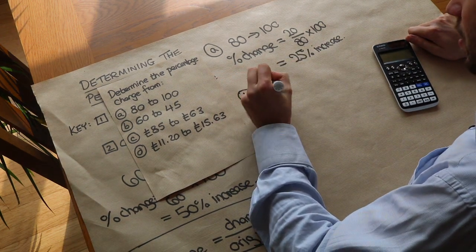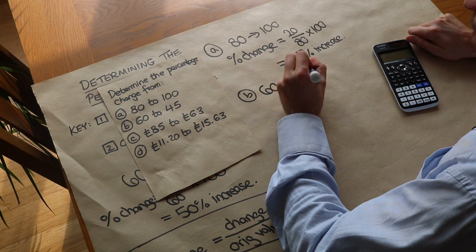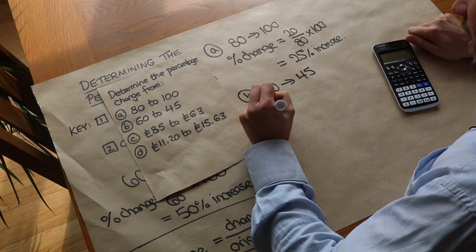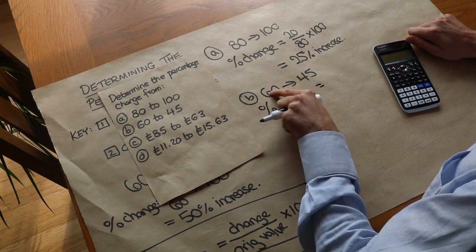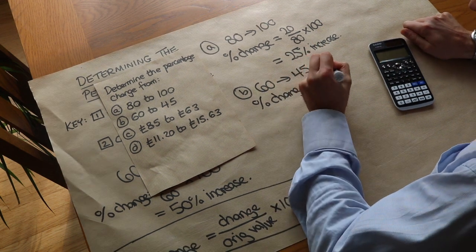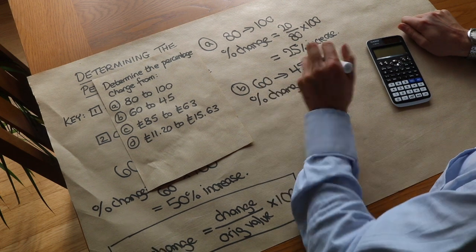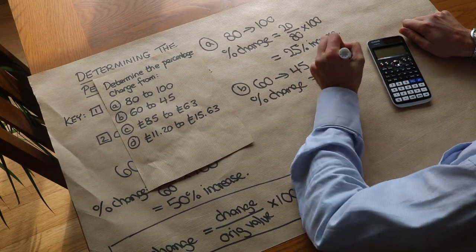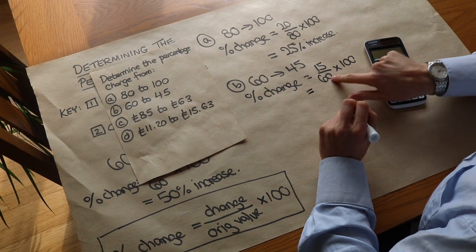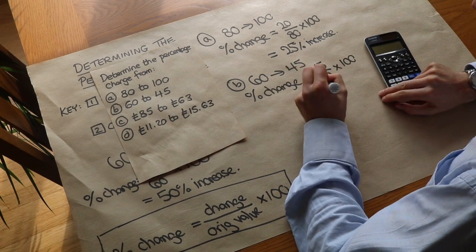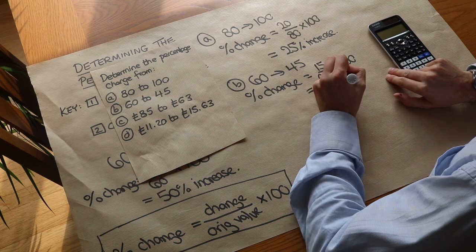What about B? The percentage change from 60 to 45. Well, the percentage change is the actual change - we can see it's going down by 15. So it's 15 as a fraction of the original amount of 60, and we times by 100. 15 over 60 is a quarter again. A quarter times 100 is 25, so it's a 25 percent decrease this time.